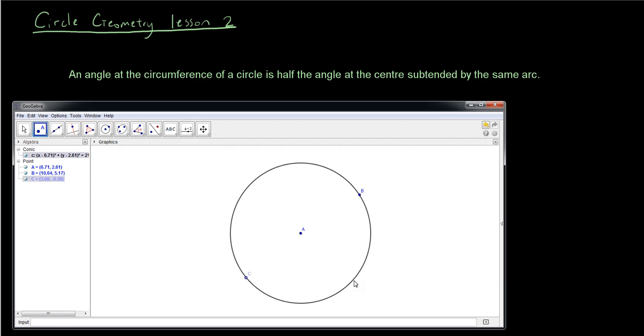Click two points on the circumference and what I want to do now is join up the center point with the two points on the circumference using the segment between two points tool. Click the center point, click the two points on the circumference.